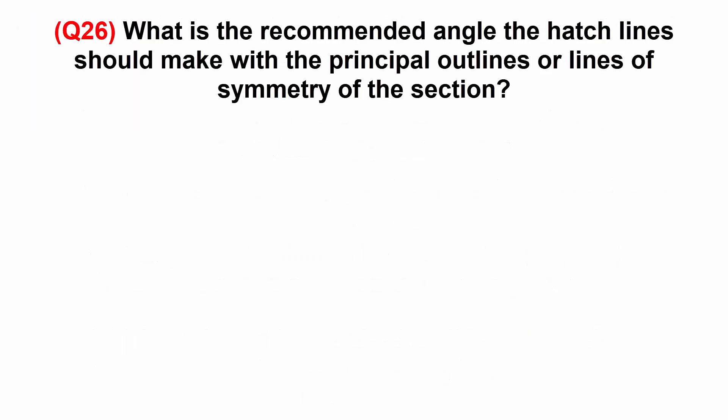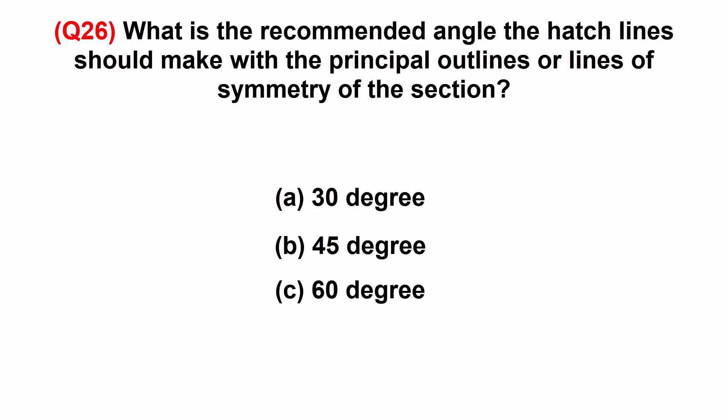What is the recommended angle the hatch lines should make with the principal outlines or lines of symmetry of the section? A: 30 degrees. B: 45 degrees. C: 60 degrees. Or D: 90 degrees.